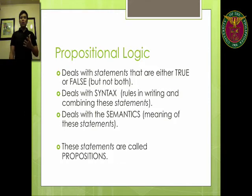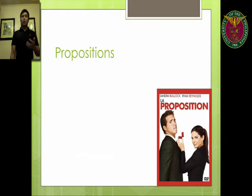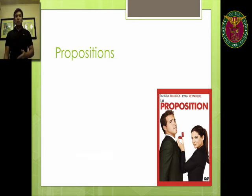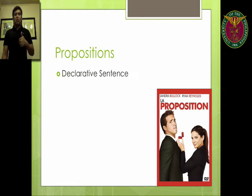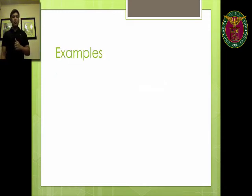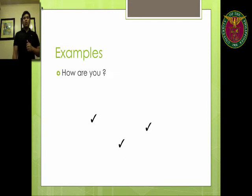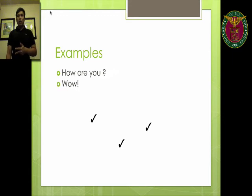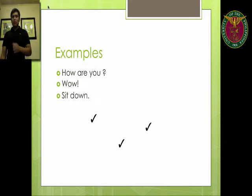So what are these statements? They are called propositions. A proposition is a declarative sentence — that's the first thing to look at. Secondly, it has to be either true or false; it can never be both. Some examples: 'How are you?' — this is not a proposition because it's an interrogative sentence. 'Wow!' — it's an exclamatory sentence, not declarative, and it doesn't have a truth value. 'Sit down' — it's an imperative statement and doesn't have a truth value.